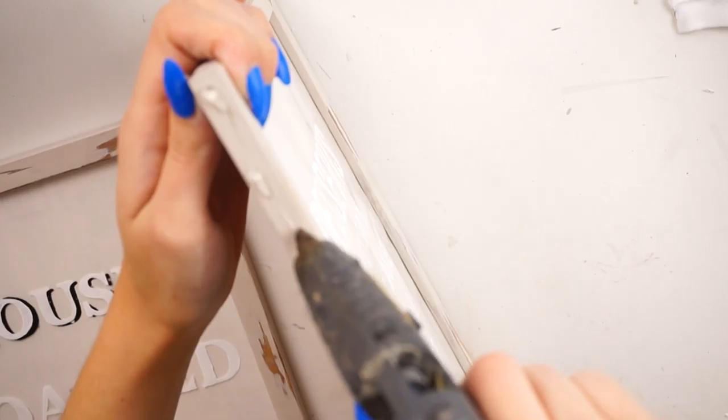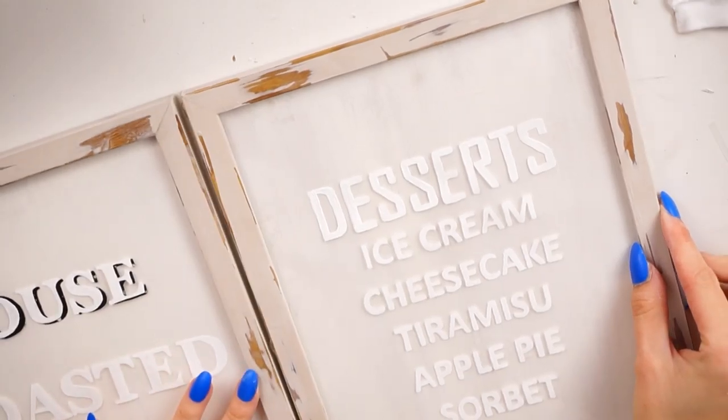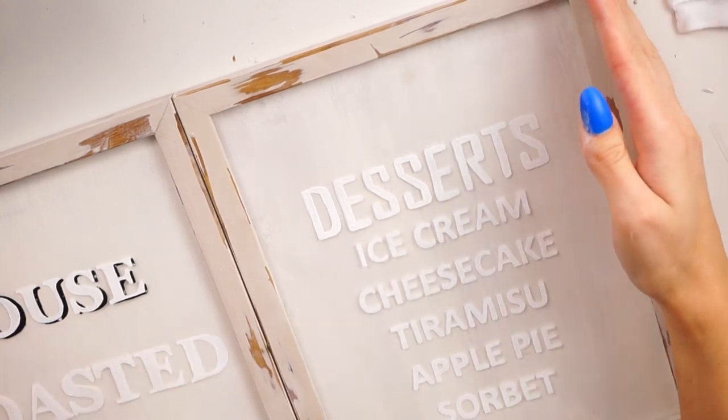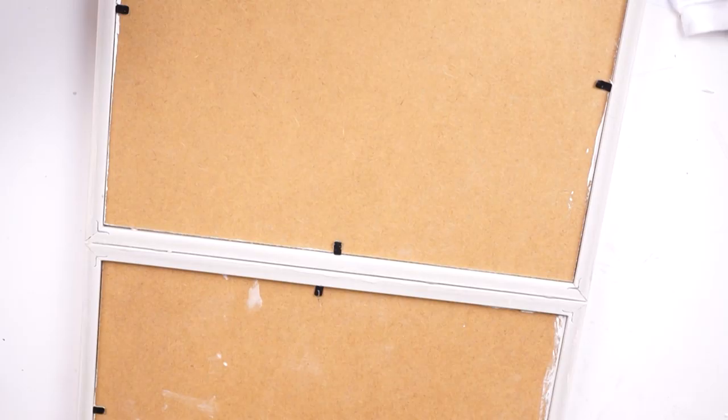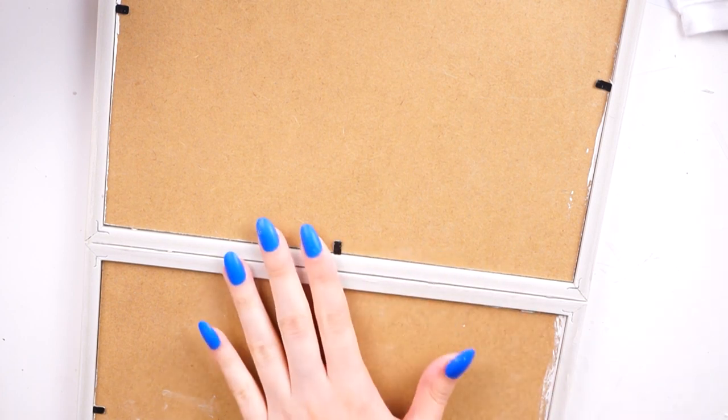I then started putting all the frames and stuff back in order, so obviously the bit with the writing on and then the backing boards and just assembled them. I then attached all of the frames next to each other using some hot glue. I just hot glued down the sides and then hot glued along the back.